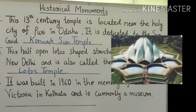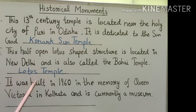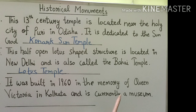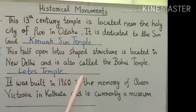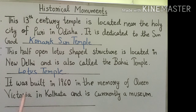Now, question number 6: It was built in 1901 in the memory of Queen Victoria and is currently a museum. It is located in Kolkata. Ye Queen Victoria ki yaad mein banaya gaya tha, aur abhi ye ek museum hai.